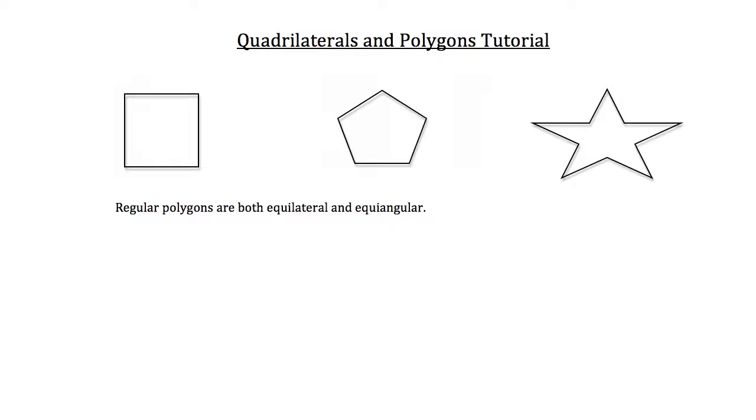So the first two figures are examples of regular polygons. This guy on the left, the square, is a typical polygon. It's got equilateral sides and equiangular sides.